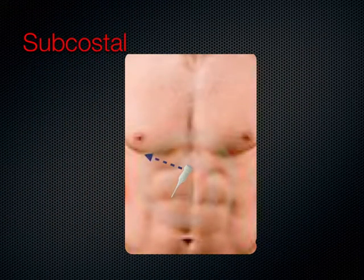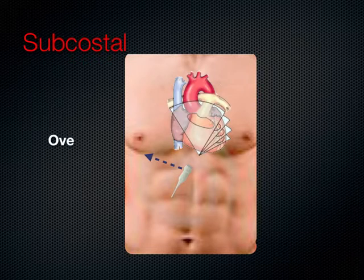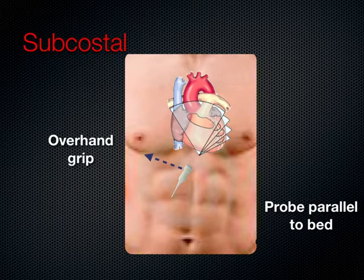The subcostal view is one of the most useful views for many of our patients, one of the easiest to train, and also the one where we can evaluate the IVC for volume status. There is an indicator on each probe that helps with orientation. In this view, the indicator is towards the patient's right. From underneath the diaphragm, we look through the diaphragm up into the thorax and view the heart. This is an overhand grip with the probe somewhat parallel to the bed, with significant pressure pushing down into the abdomen.